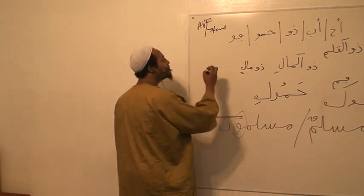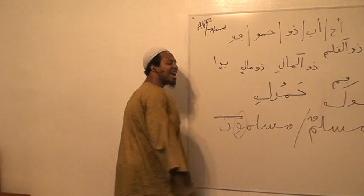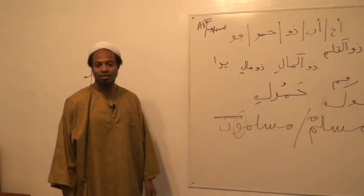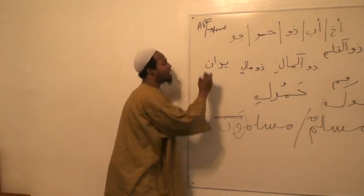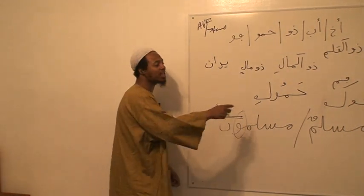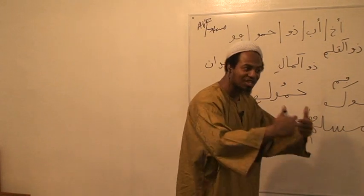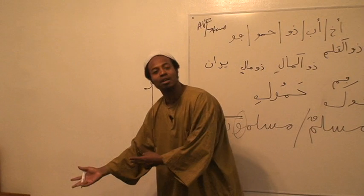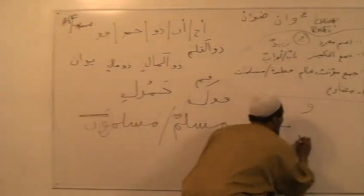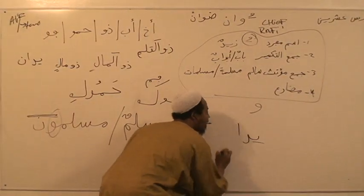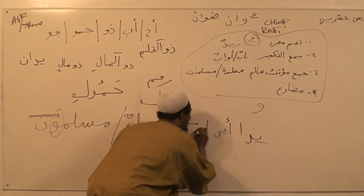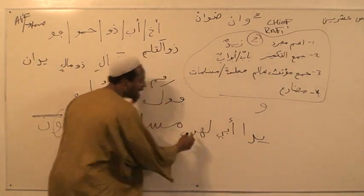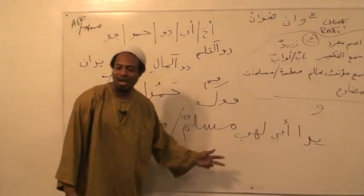What do we say? Tabbat. What's the next word? Yeda — it means the two hands. It's actually yedani, but because it's a prepositional clause — meaning the two hands of somebody — the noon is dropped and you say yedah. Who? Abi Lahab. So it's the two hands of Abi Lahab.